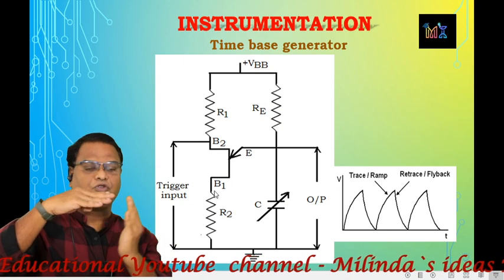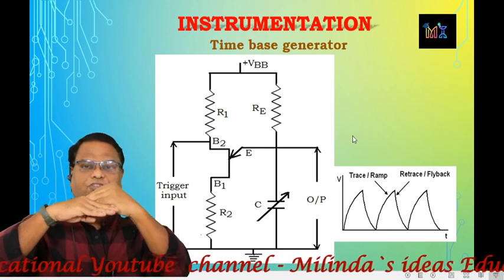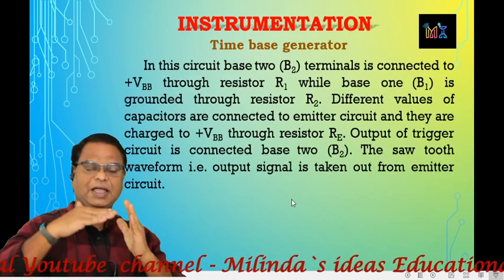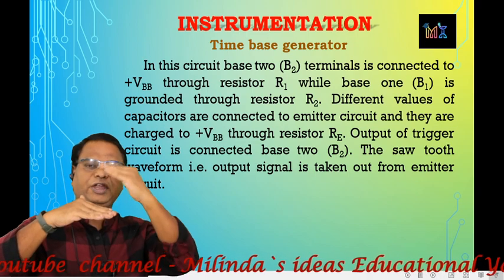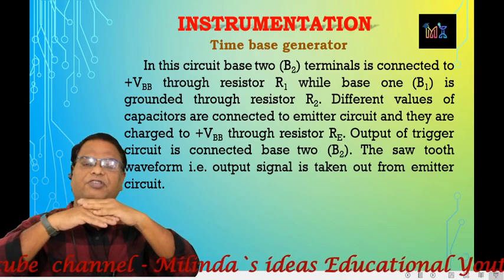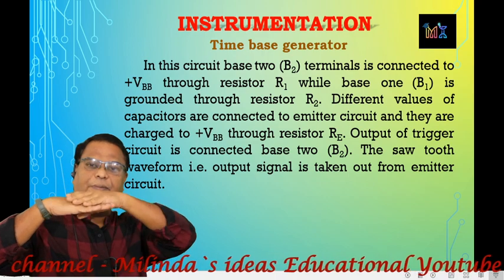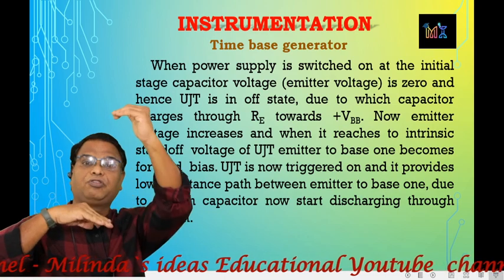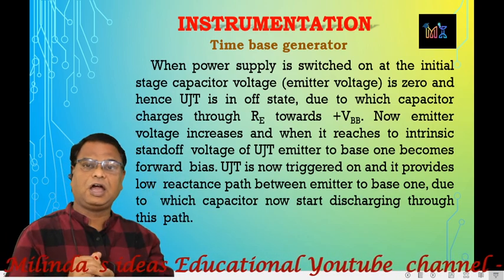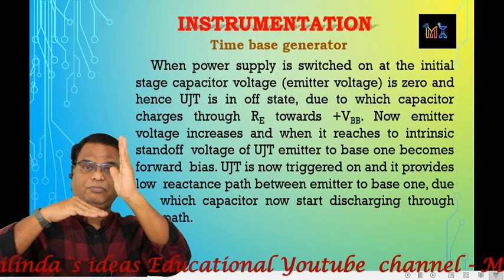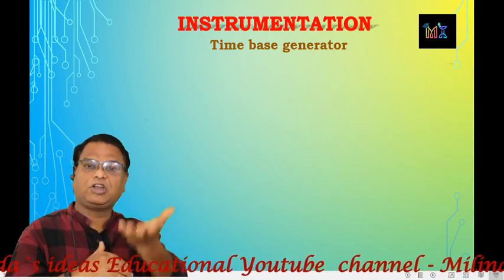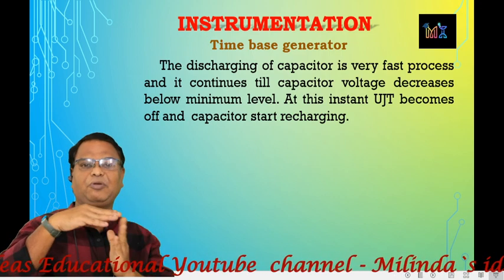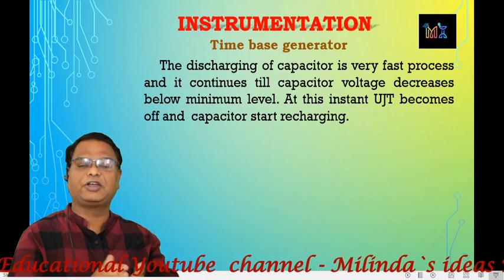The capacitor quickly discharges through the low resistance path offered by the UJT. Once the capacitor voltage drops below the intrinsic standoff potential, the UJT becomes OFF once again. Then the capacitor begins to charge again through VBB, and when it reaches the threshold, the UJT turns ON again. The capacitor discharges through the UJT, and this process continues repeatedly.